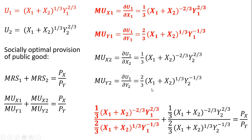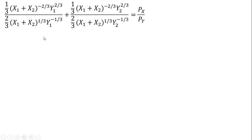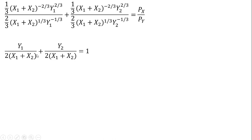Now we form the ratios of the marginal utilities. Person 1's marginal utility of fireworks divided by the marginal utility of the private good, added to the marginal rate of substitution for person 2. We cancel the fractions: 1/3 divided by 2/3 is just 1/2. Following the rules of exponents, y subscript 1 raised to the minus 1/3 in the denominator moves into the numerator leaving just y subscript 1, and x subscript 1 plus x subscript 2 raised to the minus 2/3 moves into the denominator, simplifying to x subscript 1 plus x subscript 2. The same simplification applies for person 2.